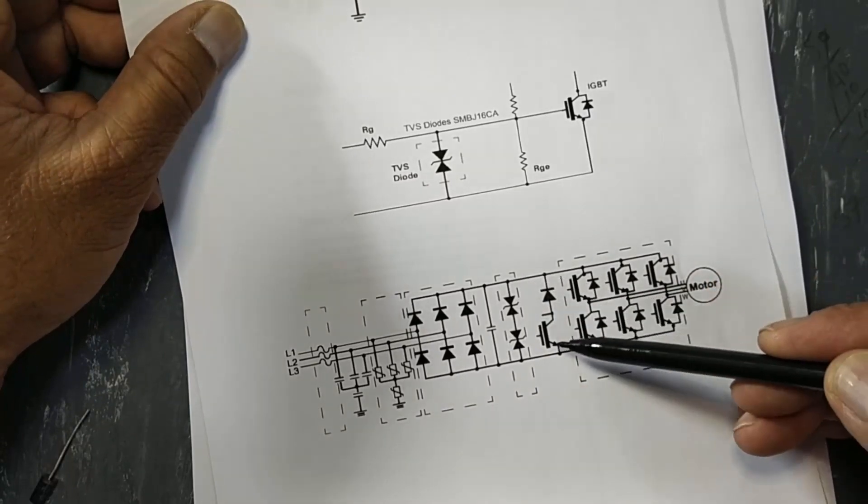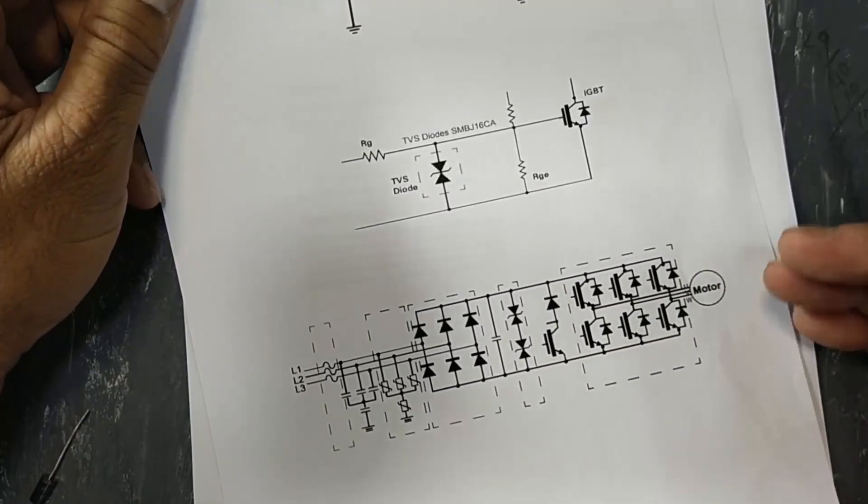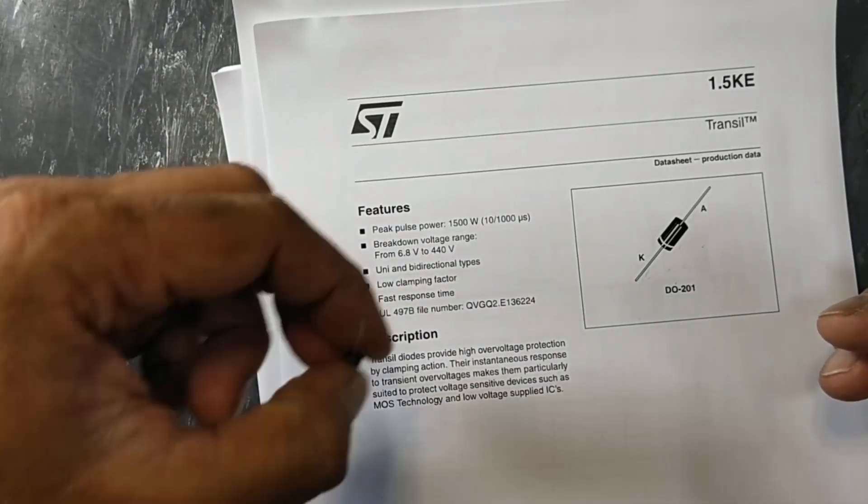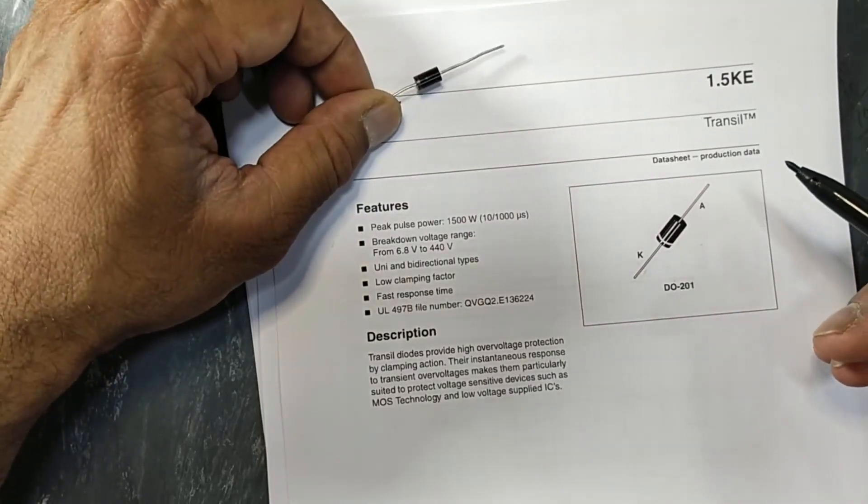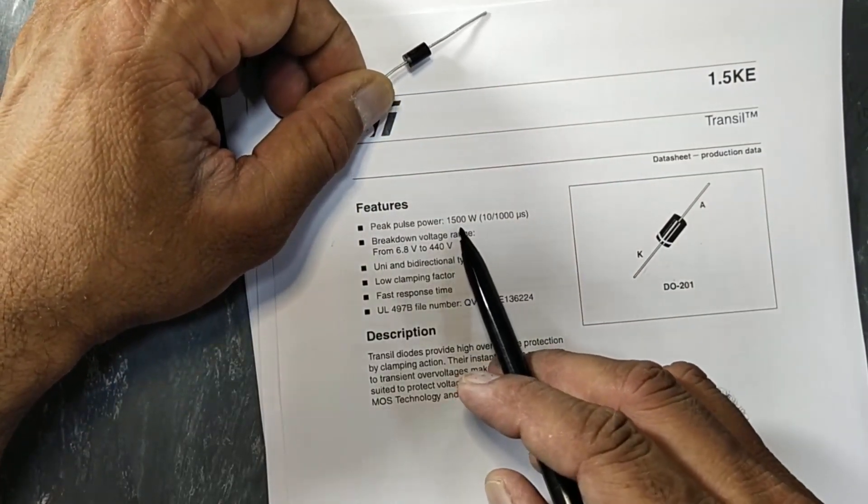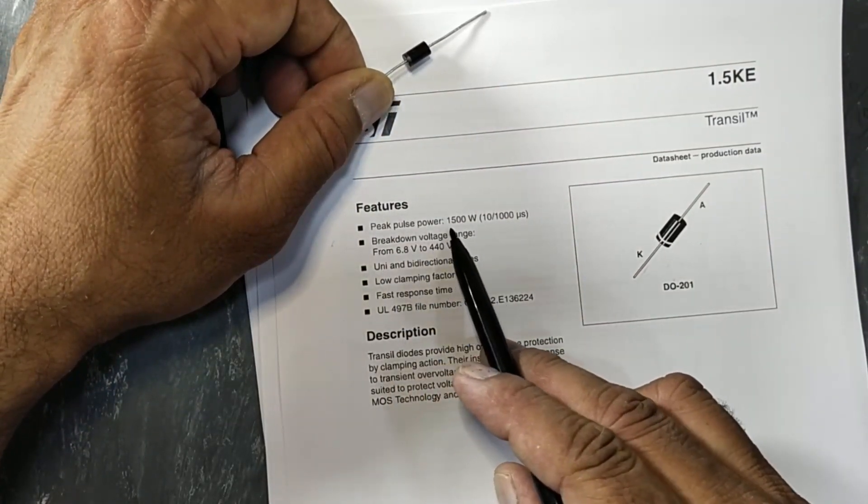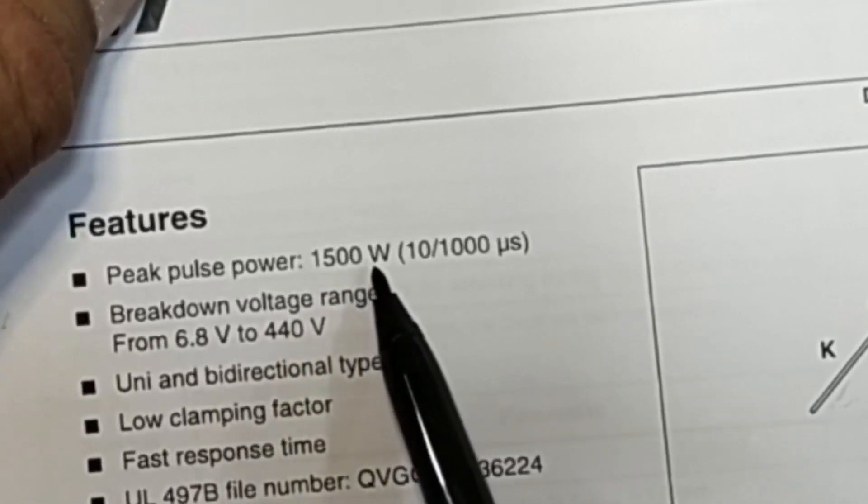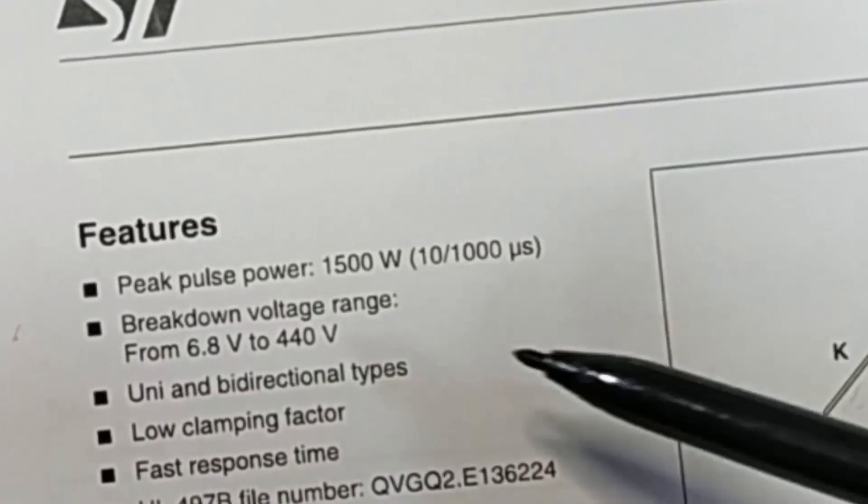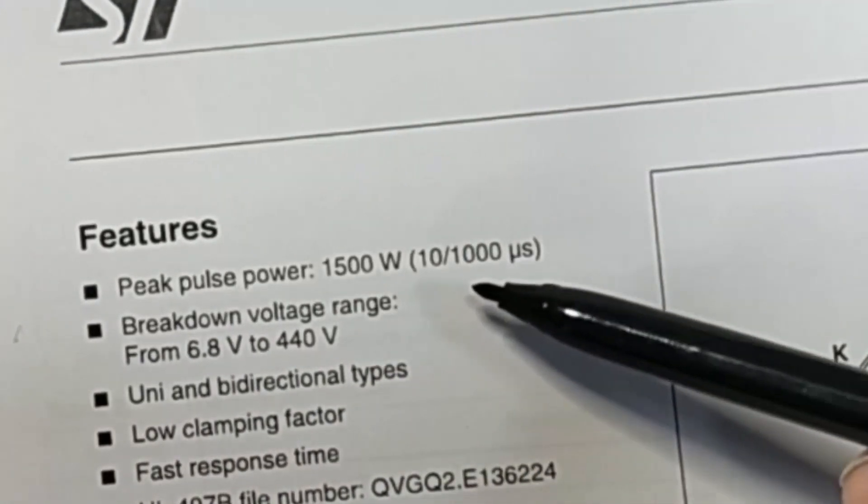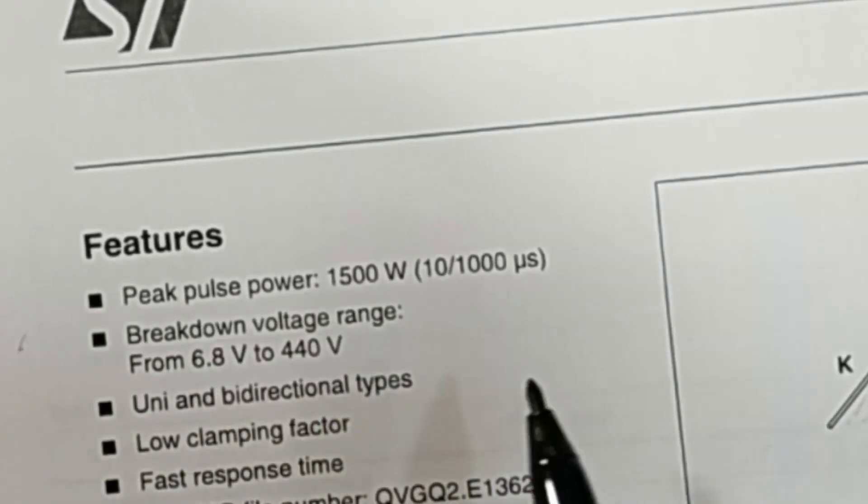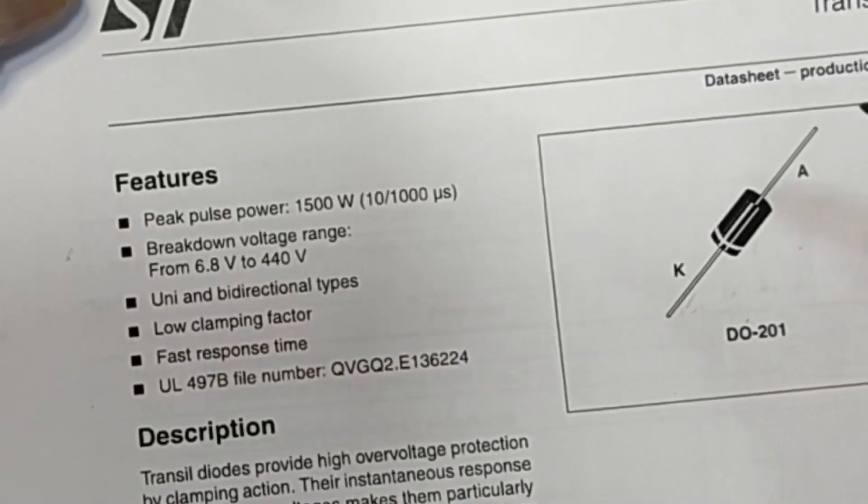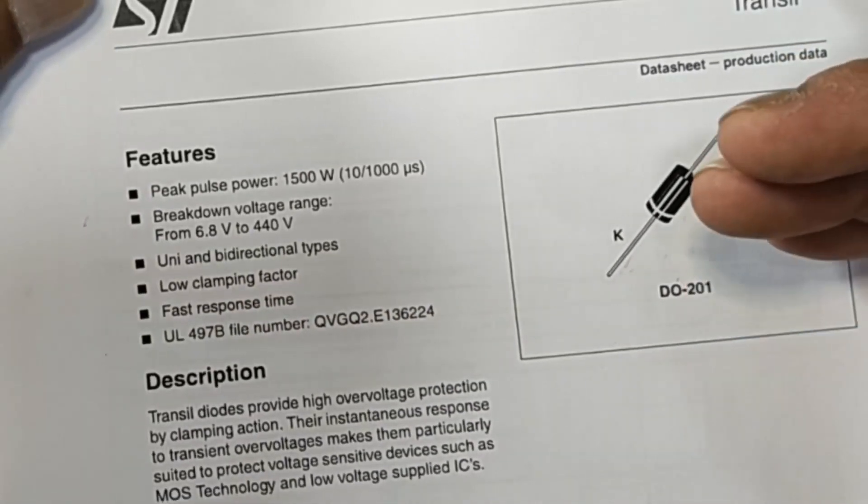If you see the datasheet for this diode, it has 1.5 kilowatt power dissipation peak pulse power - 1.3 kilowatt or 1500 watt peak pulse power. So it will clamp up to 1.5 kilowatt peaks.